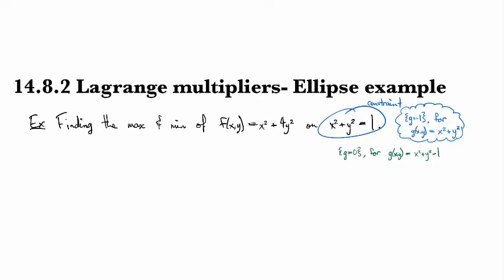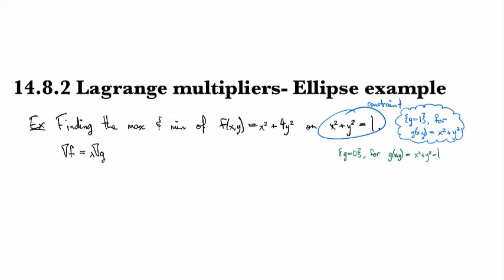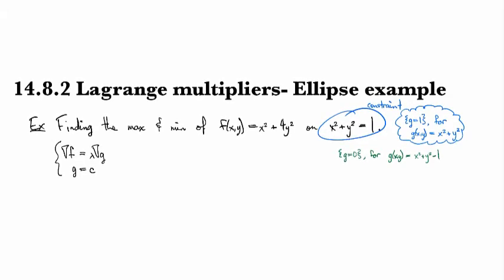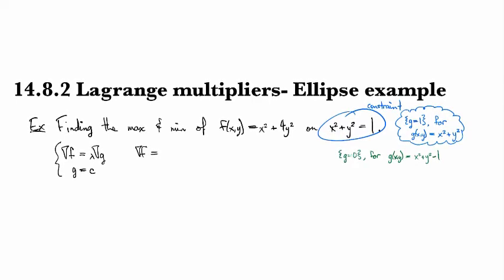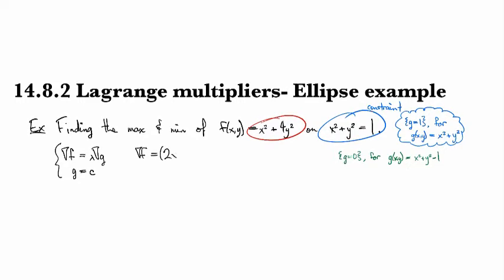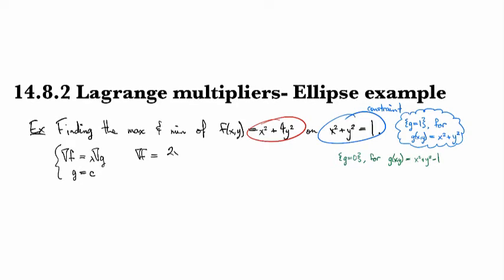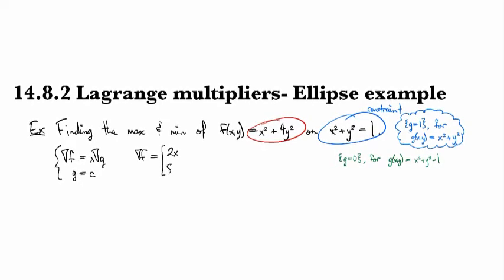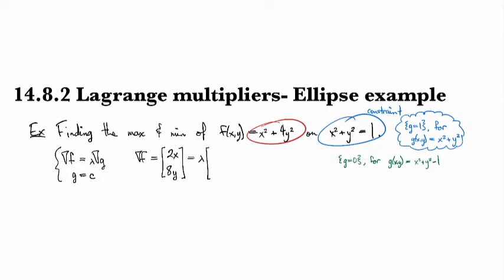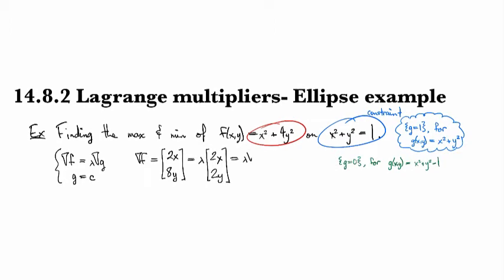So Lagrange multipliers says that we want to solve the system gradient f equals lambda gradient g and g equals constant for our system here. So first off, the gradient of f for us, we're going to be looking at this function right here. So we take the partial with respect to x and we get 2x and I'm going to write this as a column vector. It makes it a little bit more graphically appealing. So here's 2x in the first coordinate and then 8y in the second coordinate.